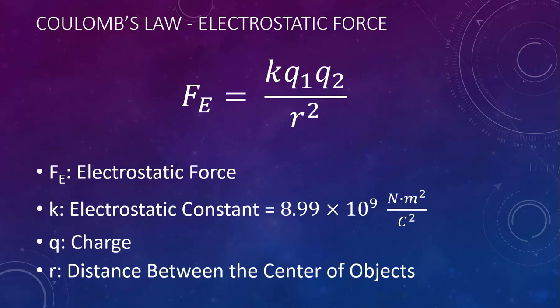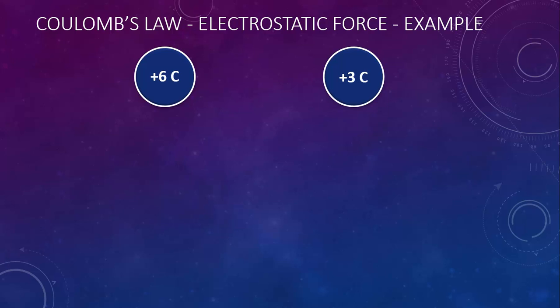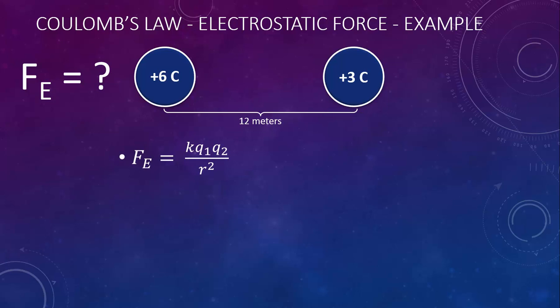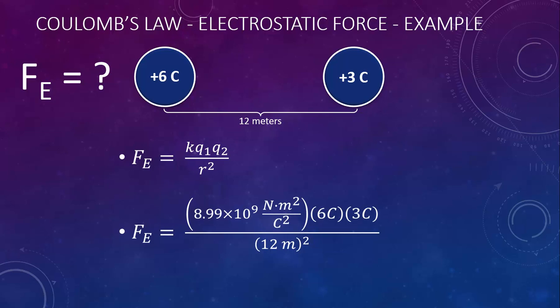Let's look at some examples using Coulomb's law. Two objects — one with a charge of positive 6 coulombs and one with positive 3 coulombs — are 12 meters apart. We start with Coulomb's law and plug in the constant, the 6 coulombs and 3 coulombs, and the 12 meters squared. The electrostatic force between them is 1.12 times 10 to the 9 newtons. Since both objects are positively charged, they are like charges, so they will repel.